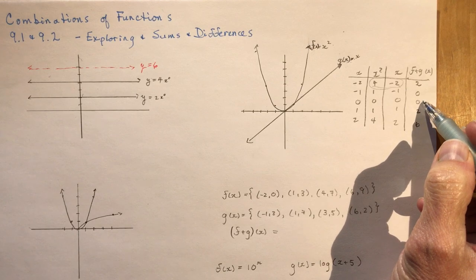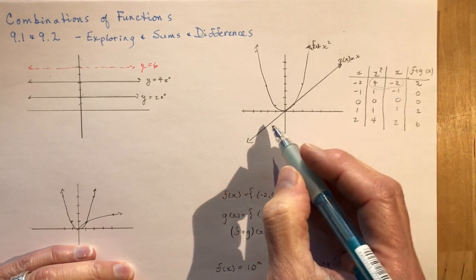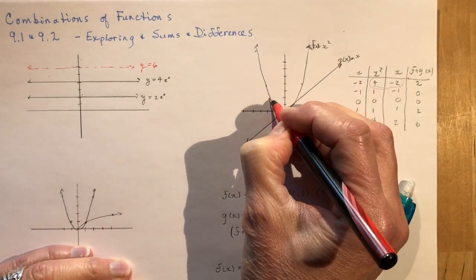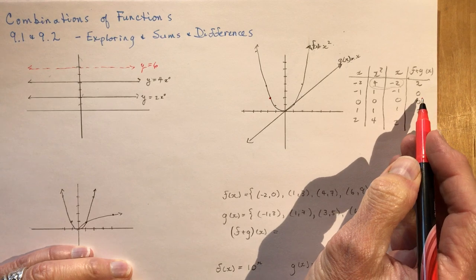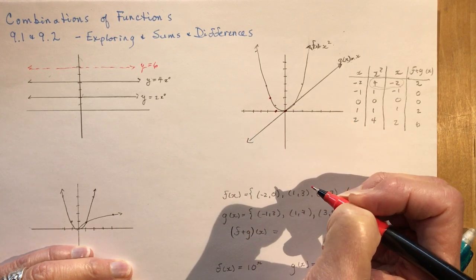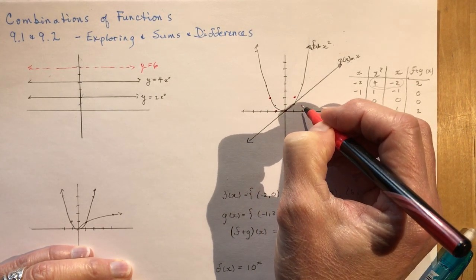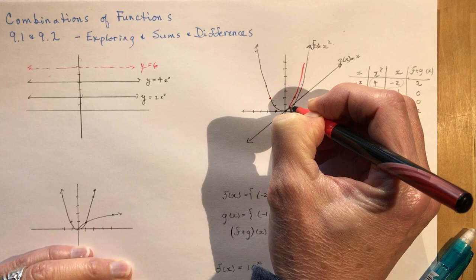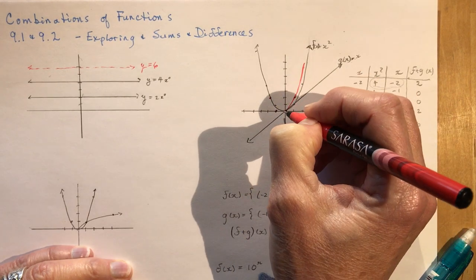So now I could graph these points. It might be a little difficult for you to figure out what it should exactly look like if you just plotted those points on the graph here. So let's say I did minus 2 and 2, minus 1 and 0, and then I have 0 and 0, and then I have 1 and 2, and then I would have 2 and 6. So it's going like this right now.